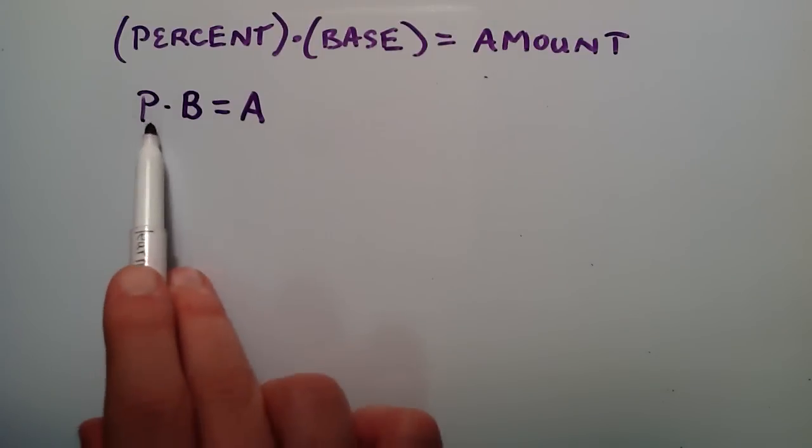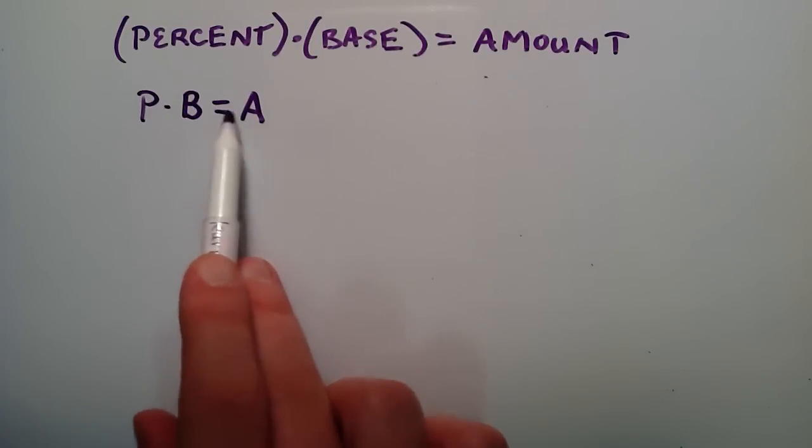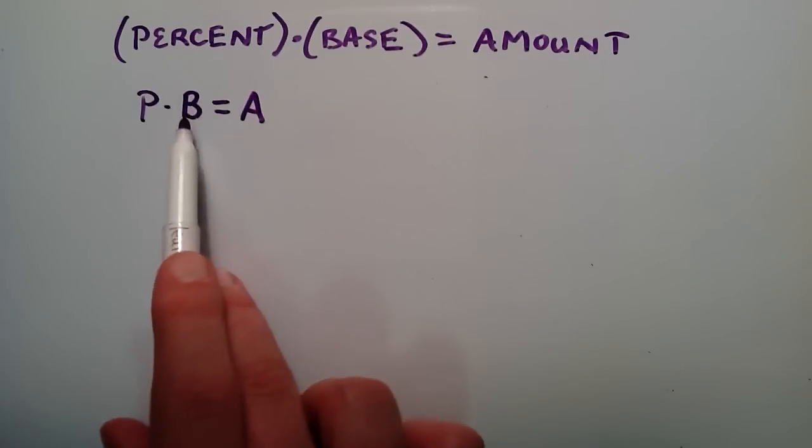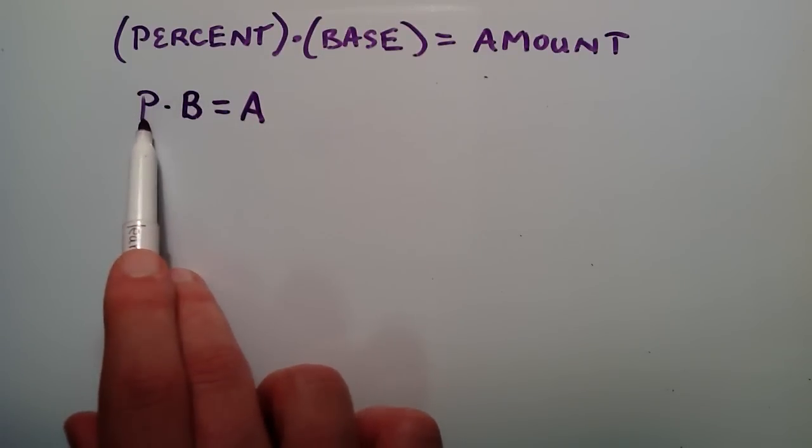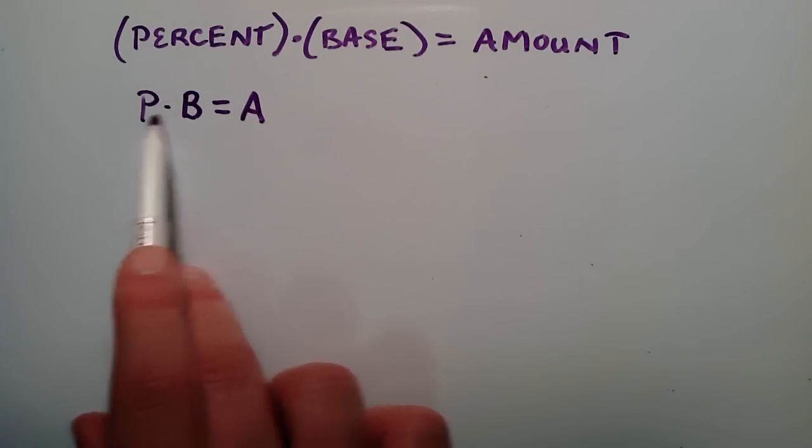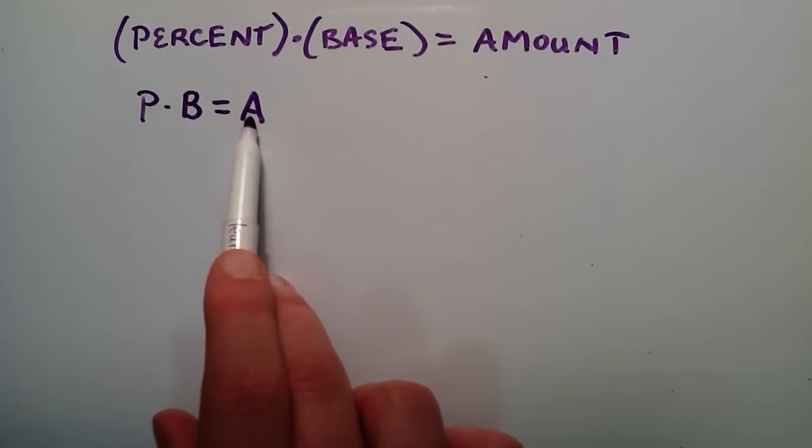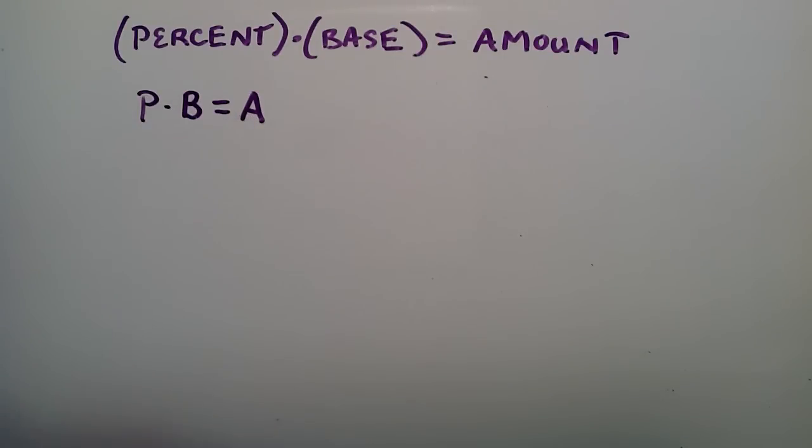And so this is it right here: P times B equals A. P is the percent, and B is the base - basically the items that we're taking the percentage of. The result of taking the percentage of B is equal to A, the amount. So let's go ahead and use some numbers here so that this makes a little bit more sense.